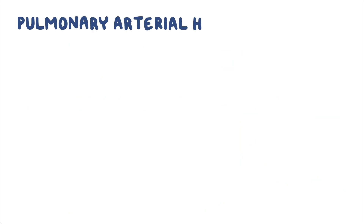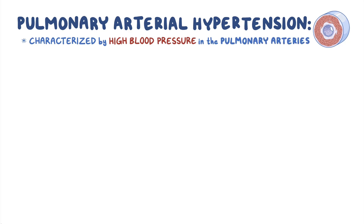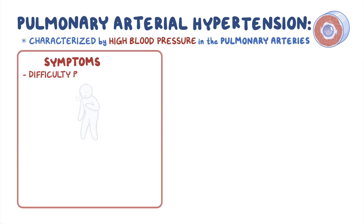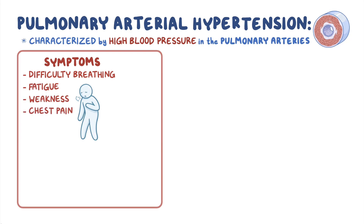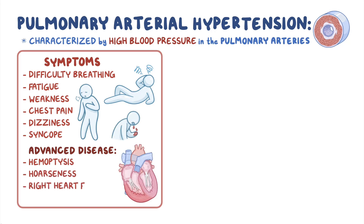Pulmonary arterial hypertension, or PAH, is a rare disorder characterized by high blood pressure in pulmonary arteries. Individuals with PAH experience symptoms like difficulty breathing, fatigue, weakness, chest pain, dizziness, and syncope. Advanced disease may present with hemoptysis, hoarseness, signs of right heart failure, and cyanosis.